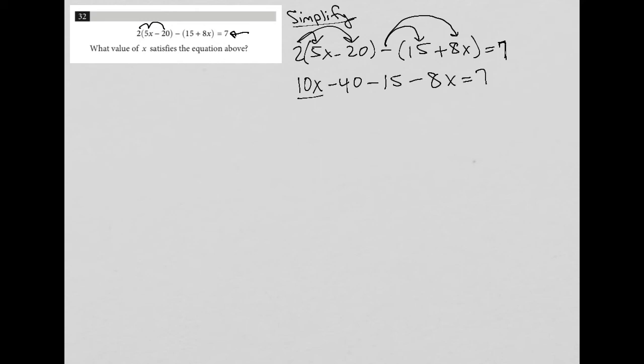Combine some like terms. 10x minus 8x is 2x, so those are gone. Negative 40 minus 15 is negative 55. And then we have equals 7.